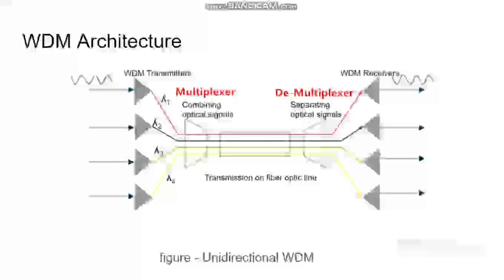Here in these figures, we can see that the transmitter transmits different wavelength signals like λ1, λ2, λ3 and λ4. Then the multiplexer combines these signals and sends them to optical fibers. Demultiplexers separate these signals and send them to different receivers.